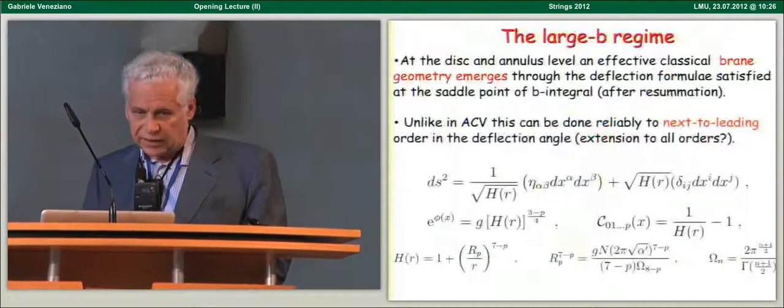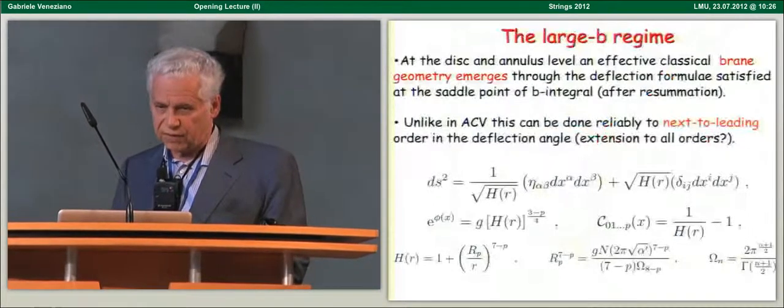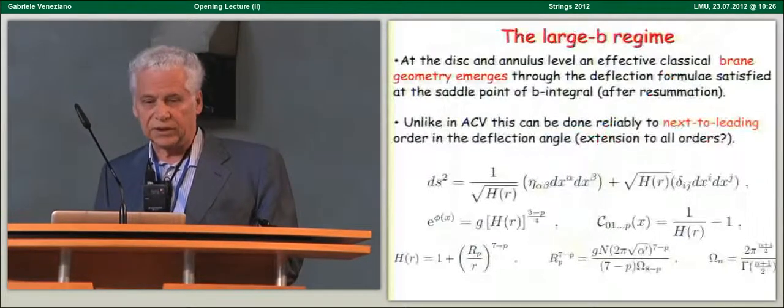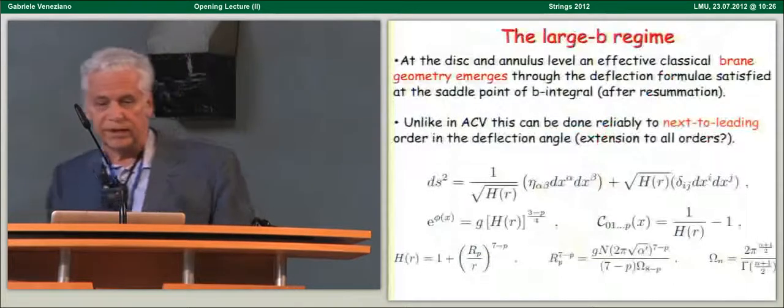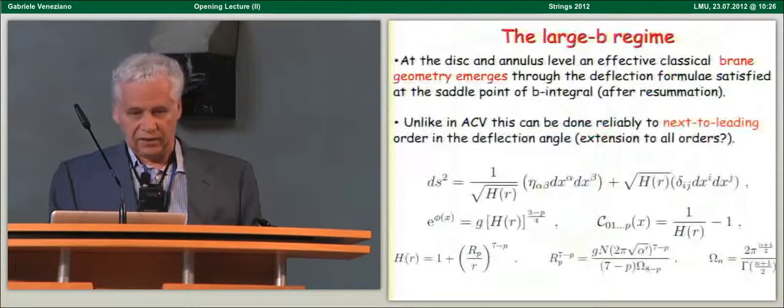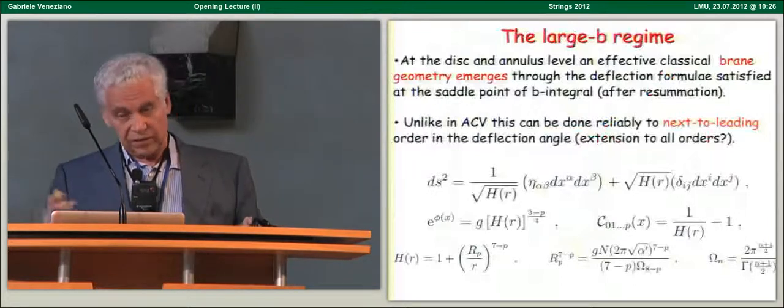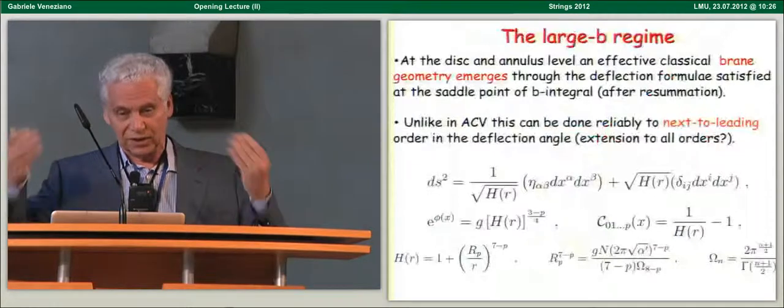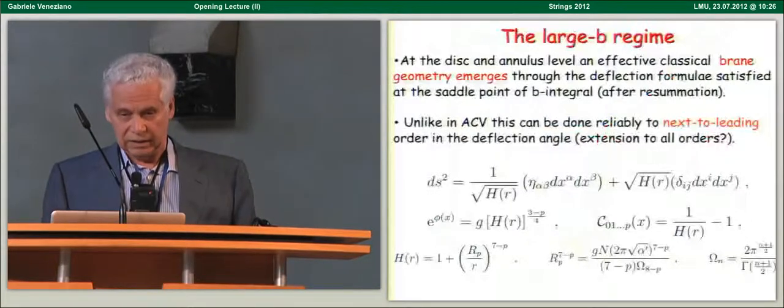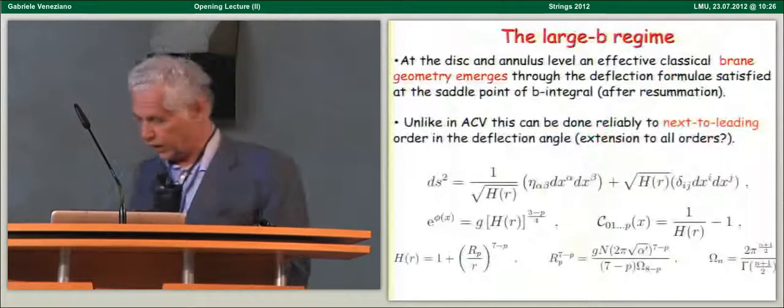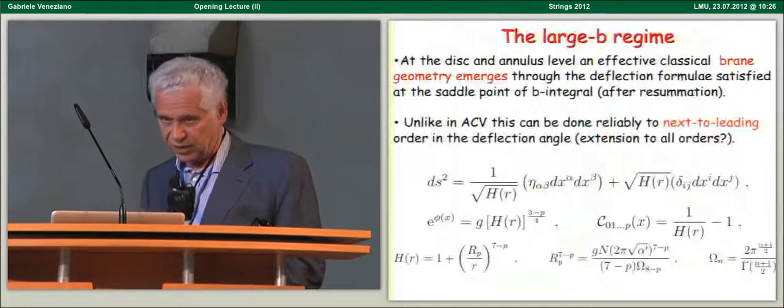And at the disc and annulus level, an effective classical brane geometry emerges through again the deflection formulae which are satisfied at the saddle point of the B integral. We have to resum an infinite number of diagrams, you get this eikonal exponentiation, and then as I said, we can reproduce classical expectations.